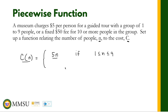But when the number of people is 10 or more, then we have a fixed rate of 50. So the total cost is 50 if the number of people n is greater than or equal to 10. That's it for the piecewise function — this is now the complete piecewise function for this specific problem.